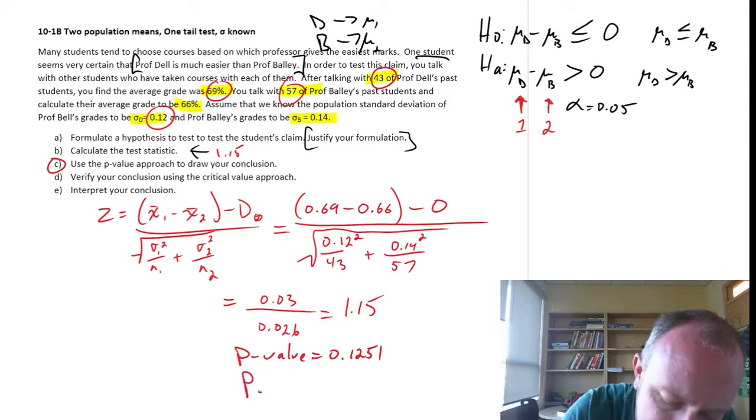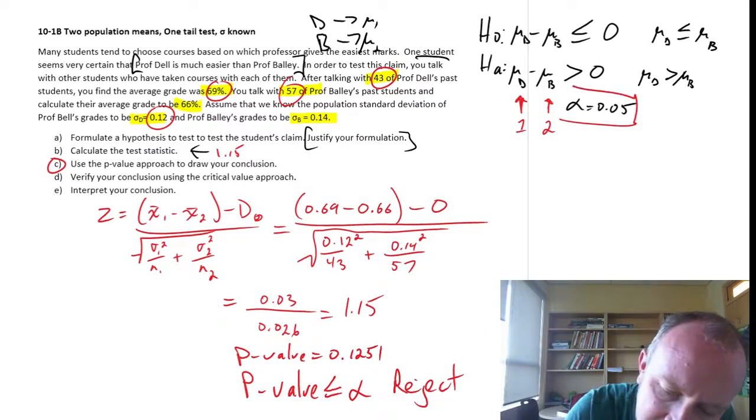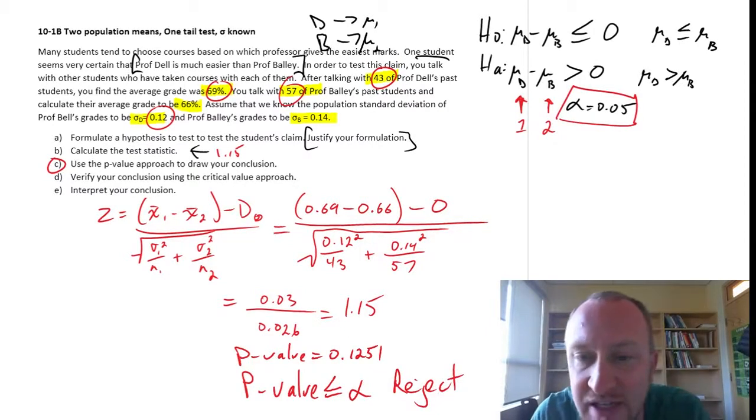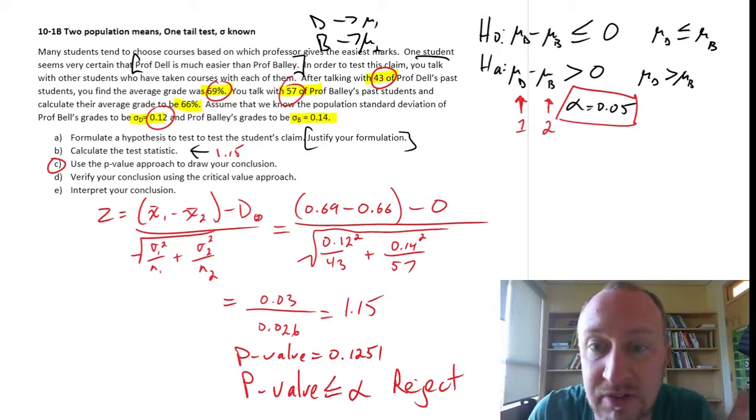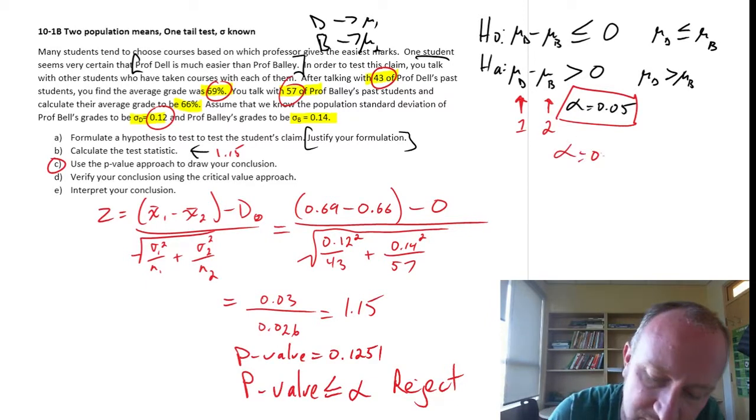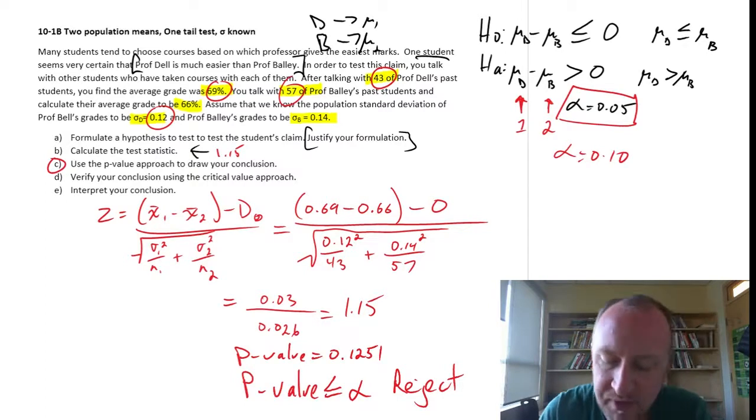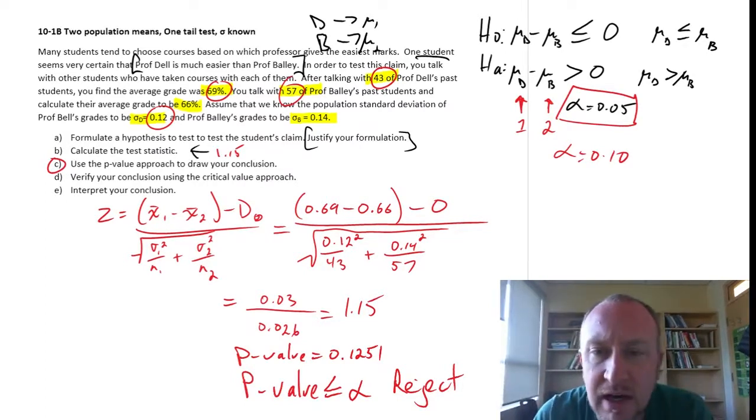Our rejection rule: if the p-value is less than or equal to alpha, we reject. Is that the case? Not with an alpha of 0.05. Alpha could be any number of things and we still wouldn't reject. Alpha could even be 0.1 and we would still not reject.